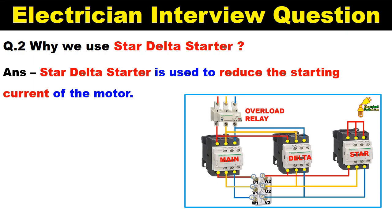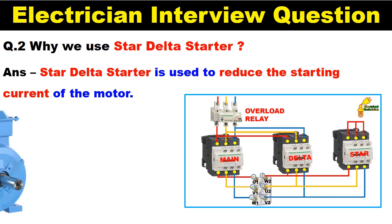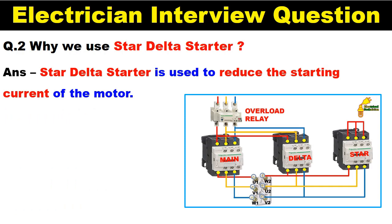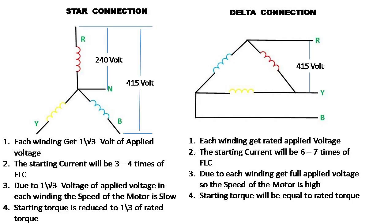It can also be asked how this starter reduces starting current. Your answer should be: when we turn on the motor in a star delta starter, we connect the motor winding in star first. By connecting motor winding in star, the motor winding receives 1/√3 voltage — meaning the motor winding gets low voltage, and this is why the starting current of the motor is reduced.